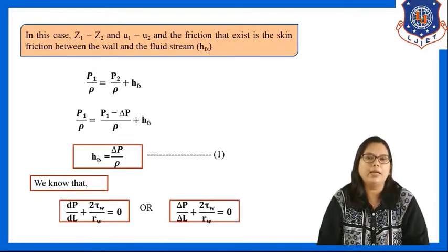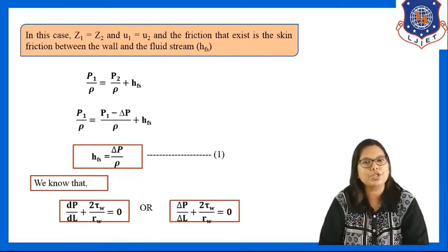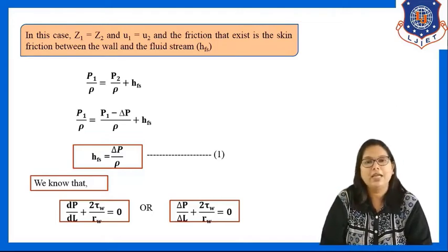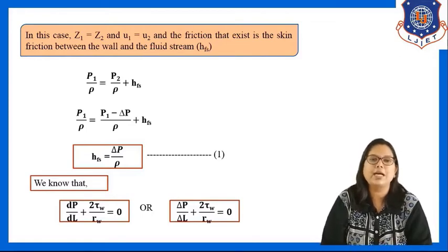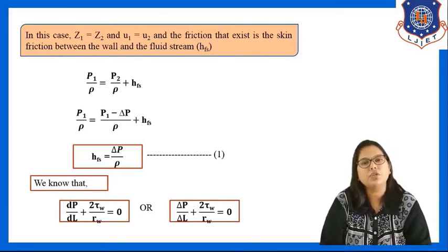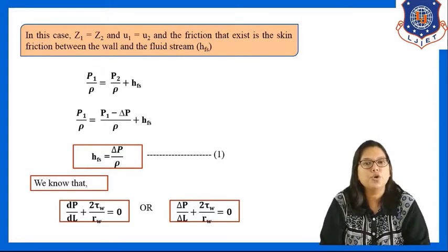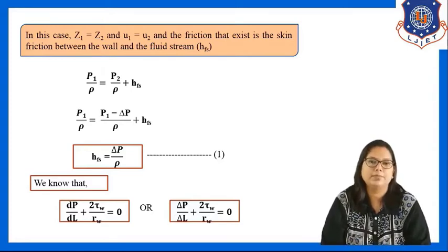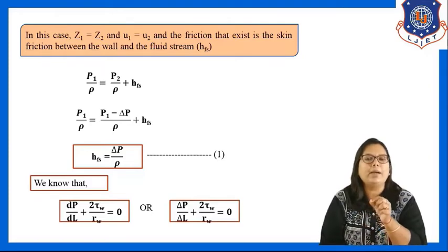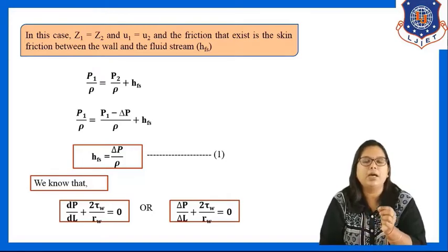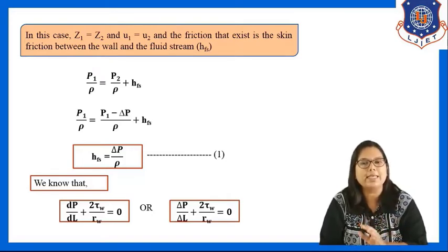From our first derivation, we know that dP/dl + 2*tau_w/rw = 0. Each derivation is interconnected, so we need to remember some of these equations. This can be equivalently written as delta P/delta L + 2*tau_w/rw = 0.